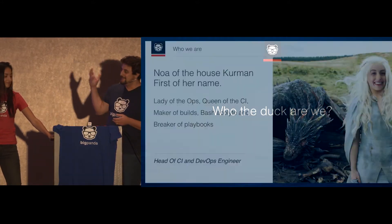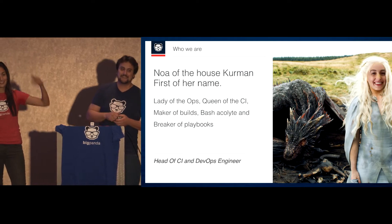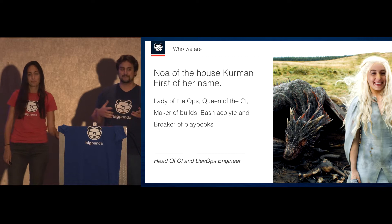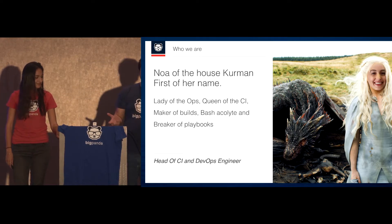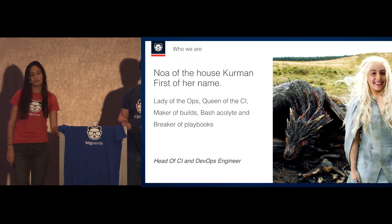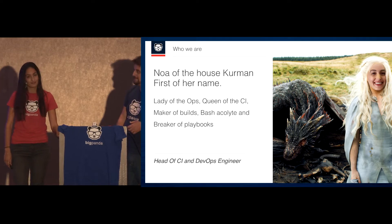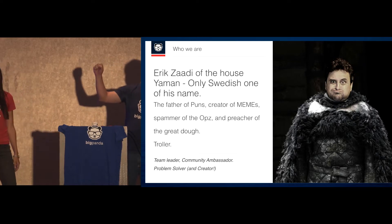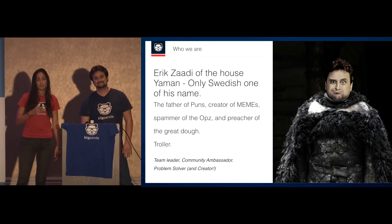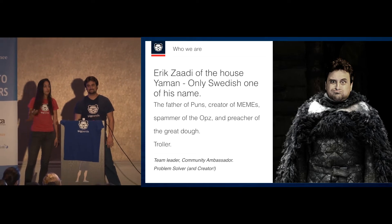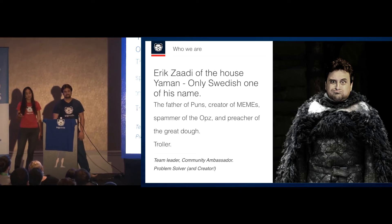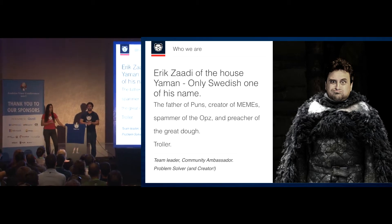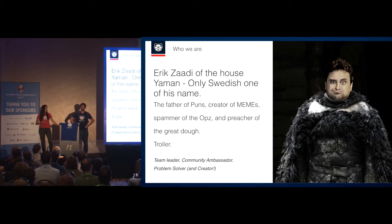For us two: this is Noah Kurman. Noah is our CI guild leader and our most famous DevOps engineer. You might have heard her lecturing about Ansible at our Ansible meetup and other meetups. And this is Eric Zahadi. Eric is a team leader at BigPanda, our community ambassador, dealing with all the conferences and meetups, and also our biggest problem solver.